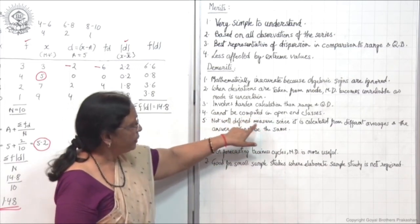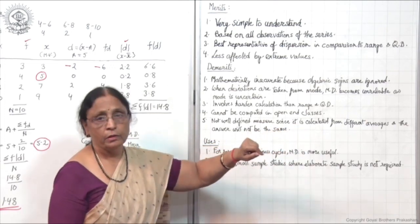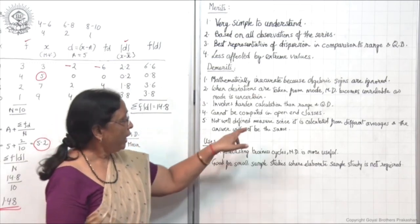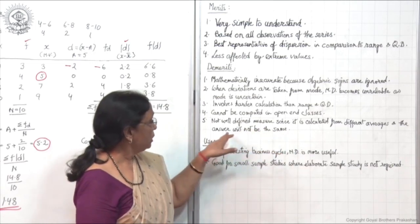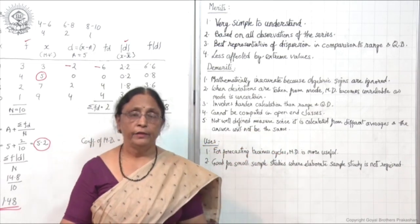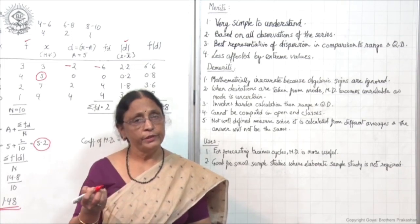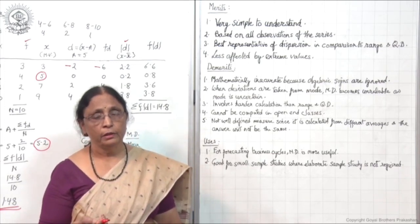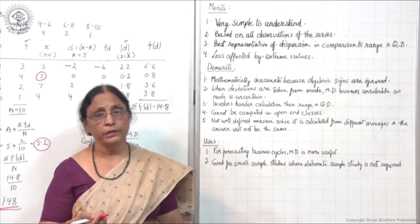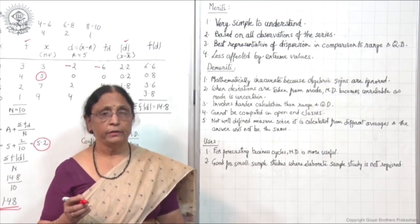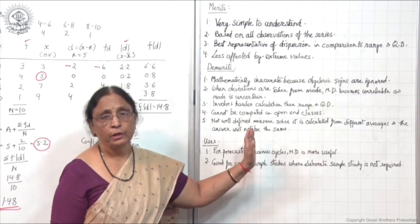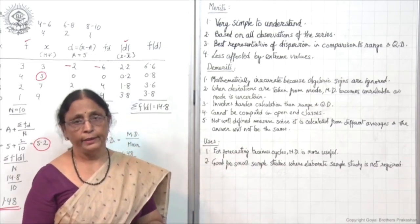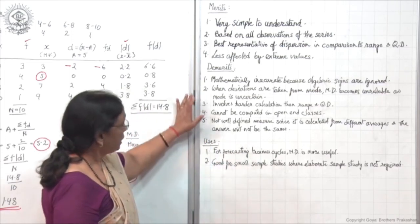Fifth demerit: not a well-defined measure, since it is calculated from different averages — mean, median, and mode — and the answer will not be the same in each case. There may be little difference in the answer between mean and median. So it is not very accurate in the sense that all three answers may not be the same.